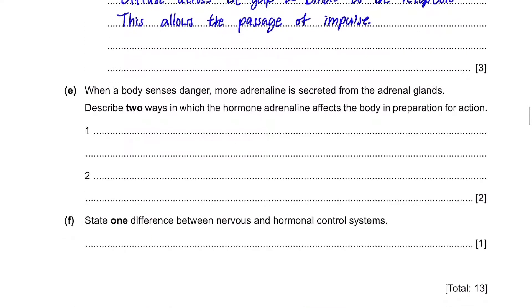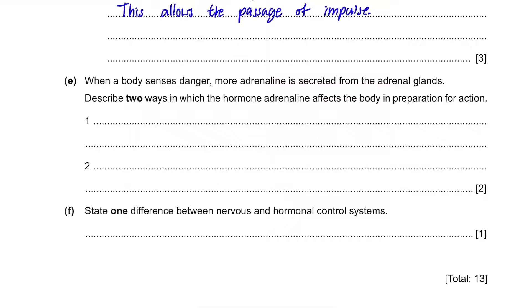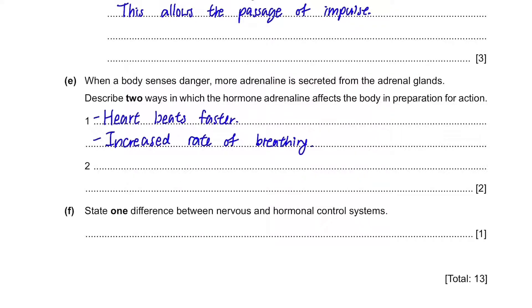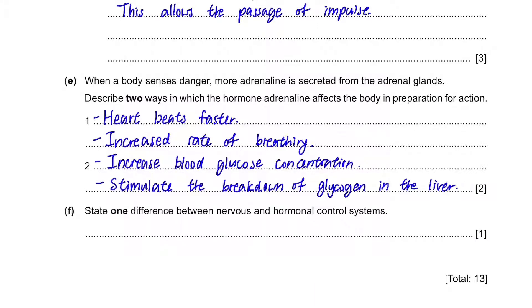Part E: when the body senses danger, more adrenaline is secreted from the adrenal glands. Describe two ways in which adrenaline affects the body in preparation for action. Firstly, it makes your heart beat faster and breathing faster. It also increases blood glucose concentration by stimulating the breakdown of glycogen in the liver. The pupils in your eyes will dilate to allow more light to see better, and you will have increased sensitivity to be more alert to your surroundings.